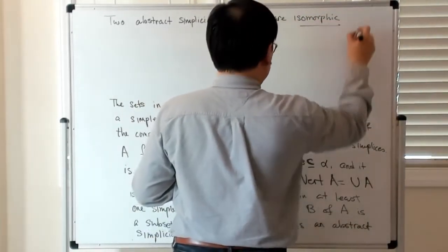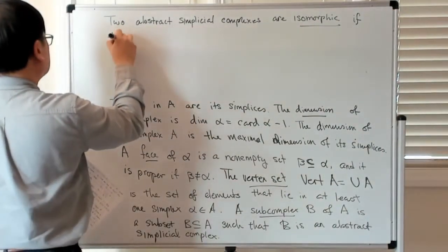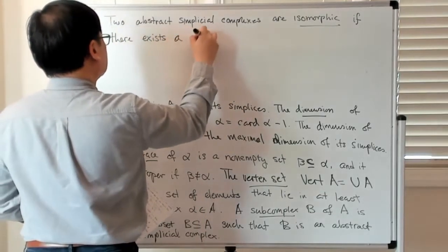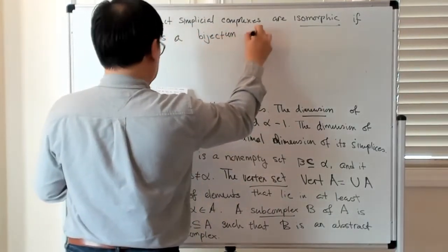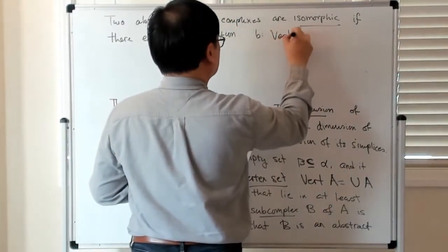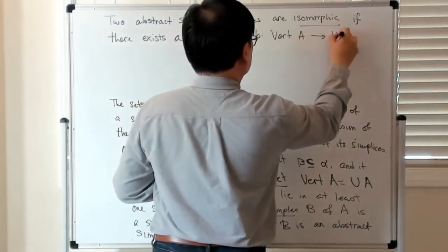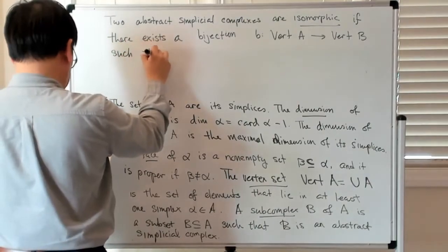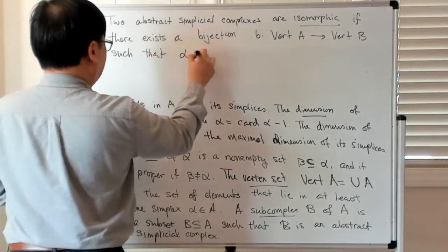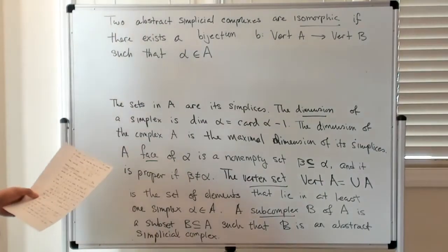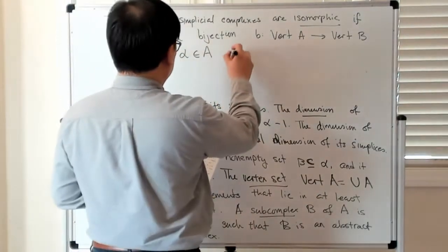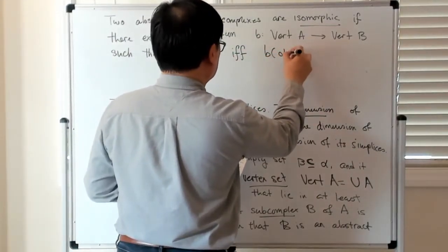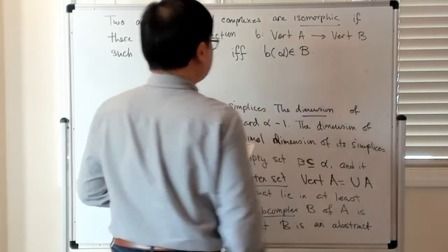If there exists a bijection b from the vertex set of one to the other, such that if alpha is in the abstract simplicial complex A, this is true if and only if b of alpha is in the abstract simplicial complex B.